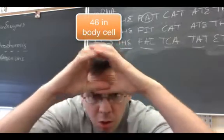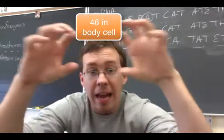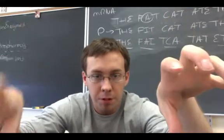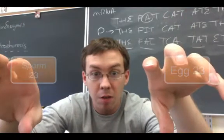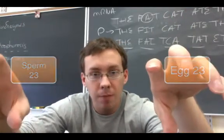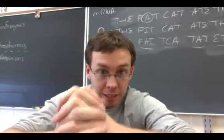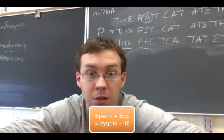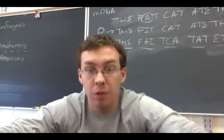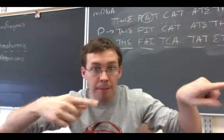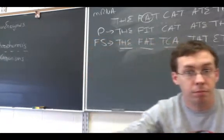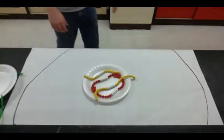Remember that we start off with 46 chromosomes. When we perform meiosis, we get sperm and egg — dad produces sperm, mom produces egg. Each one of these has 23 chromosomes. When they unite during fertilization, we get 46 chromosomes again. That's why there needs to be half as much information — half as many chromosomes.